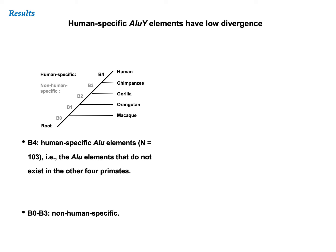Alu elements can be classified into three families — AluJ, AluS, and AluY — conveniently in alphabetical order from the oldest to the youngest. We hypothesized that the younger families might have higher fractions of expressed Alu elements. However, we did not observe a significant difference.